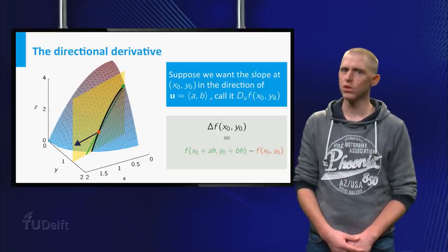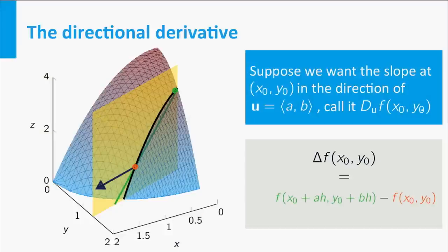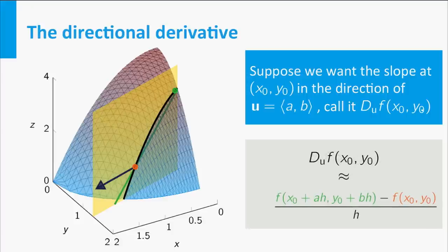If you travel a small distance h from x0, y0 in the direction of u, you arrive at the point x0 plus a h, y0 plus b h, because u is a unit vector. The function value then changes with delta f equal to f x0 plus a h, y0 plus b h minus f x0, y0.